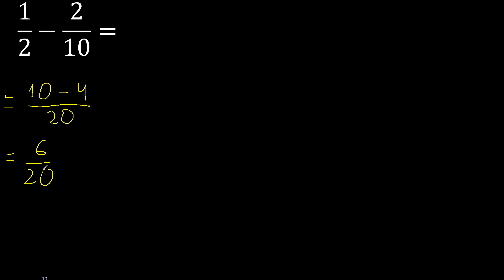Six can be simplified because it can be divided by the same number — divided by 2, divided by 2, divided by 2. Finished.